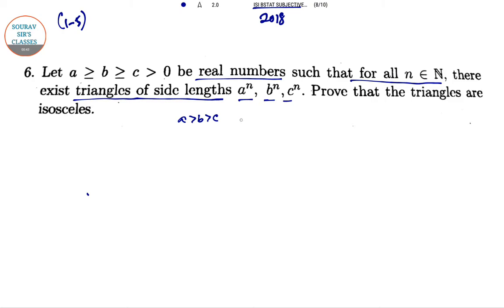Since a^n, b^n, and c^n will also form a triangle as given, we can write the sum of any two sides is greater than the third. So we divide both sides by a^n.